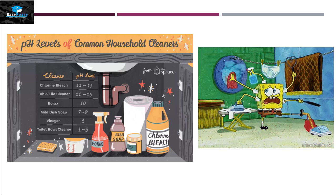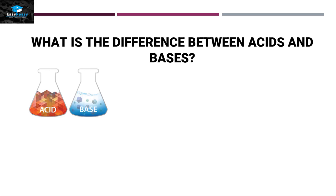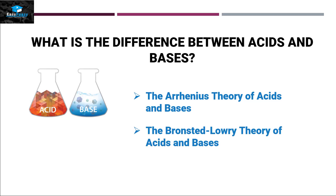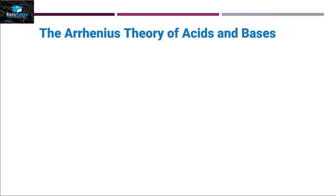Now, what is the basic difference between acids and bases? We have three different theories that explain acids and bases: the Arrhenius theory, the Bronsted-Lowry theory, and the Lewis theory of acids and bases. Let's start with the first theory — the Arrhenius theory.